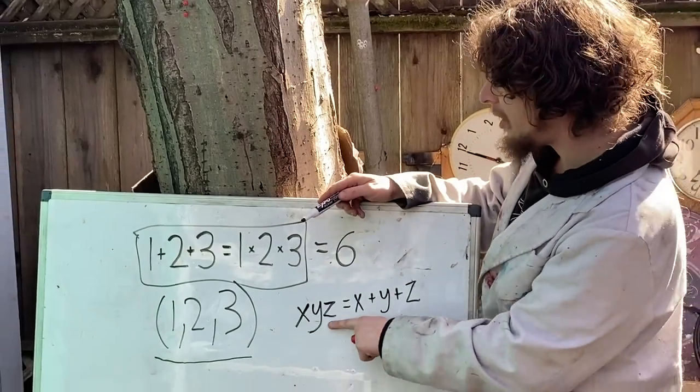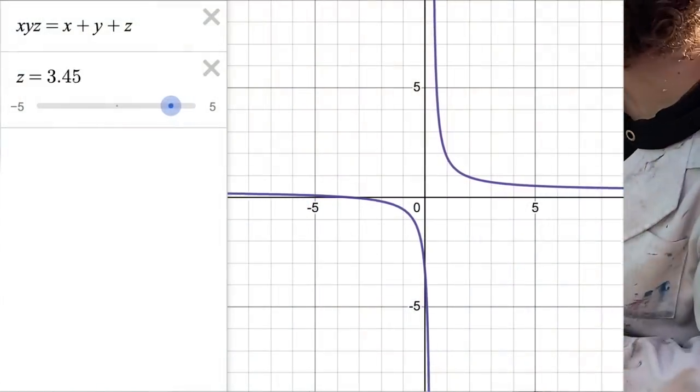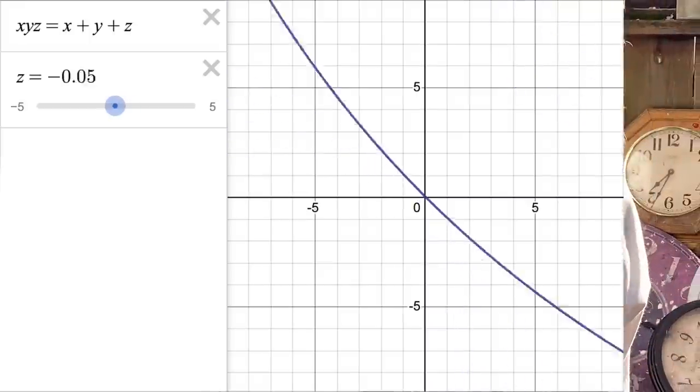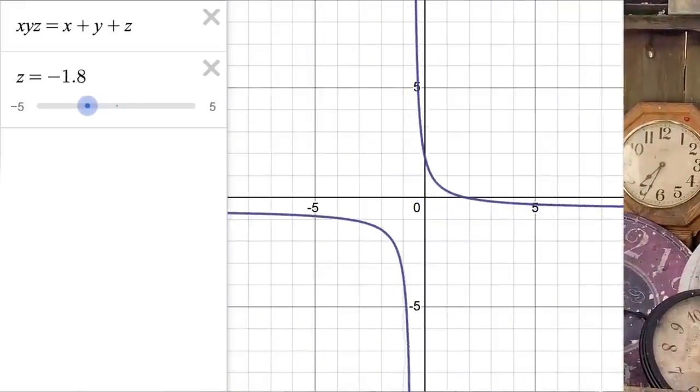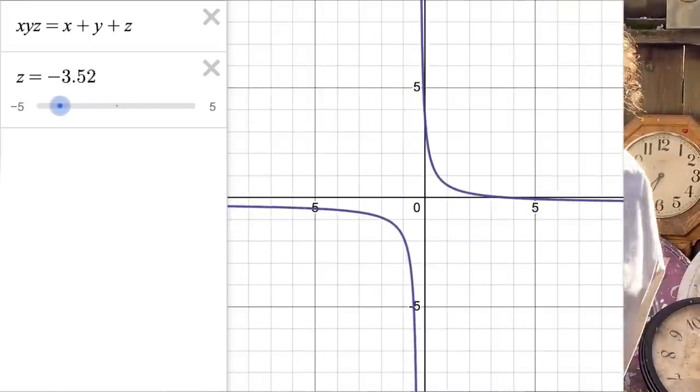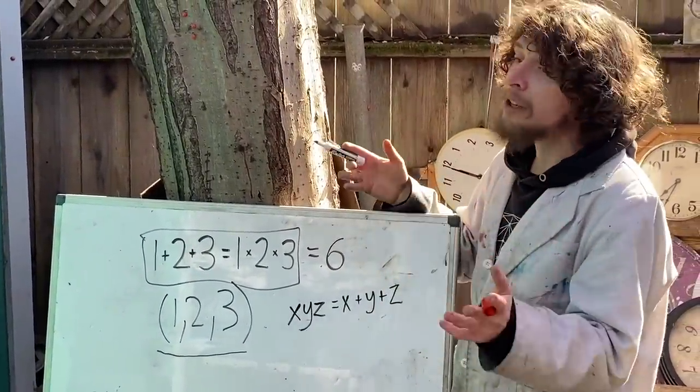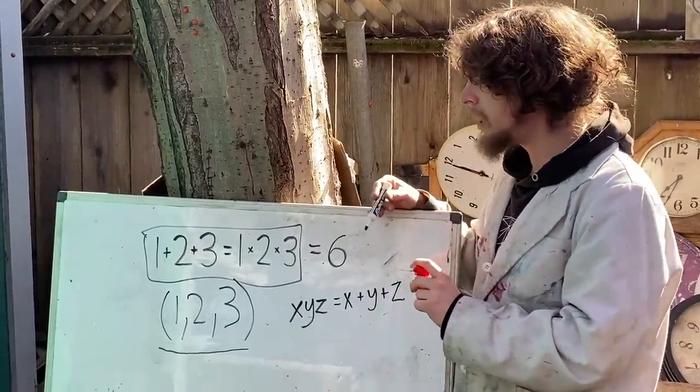And if we put z on a slider on that graph, we can zoom through all sorts of different combinations of what the other two could be, and find all sorts of possible trios of numbers with this property, if we didn't require them all to be positive integers.